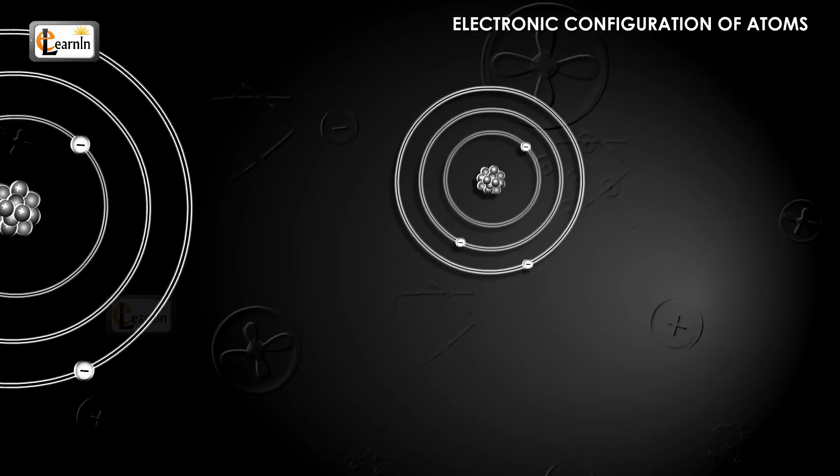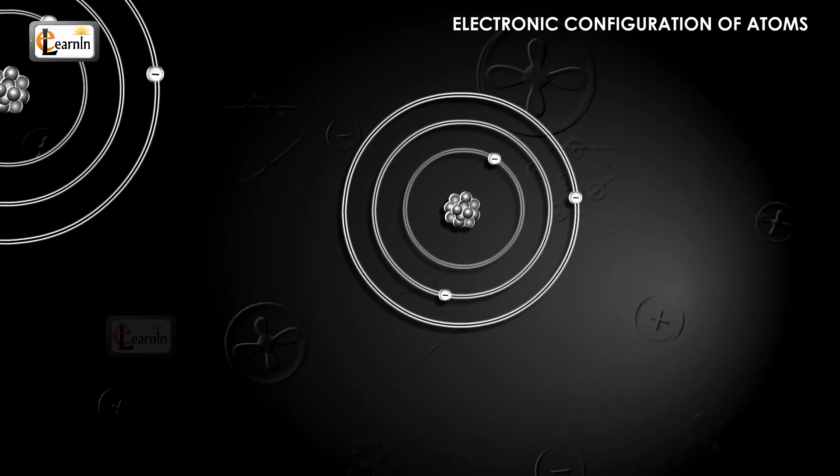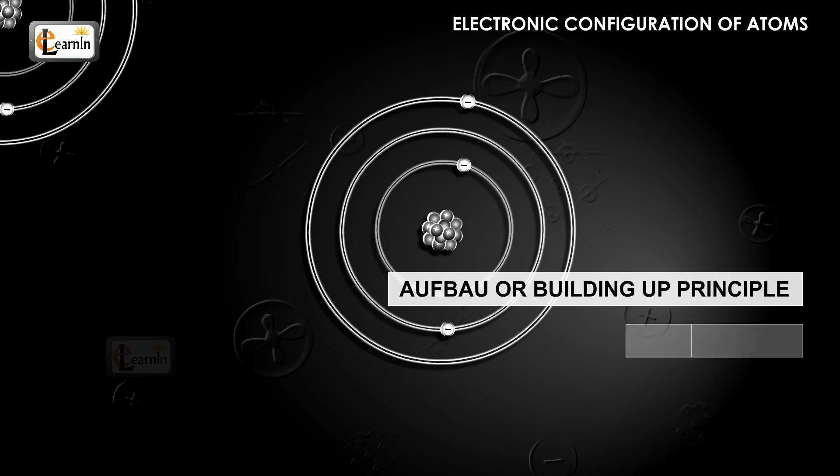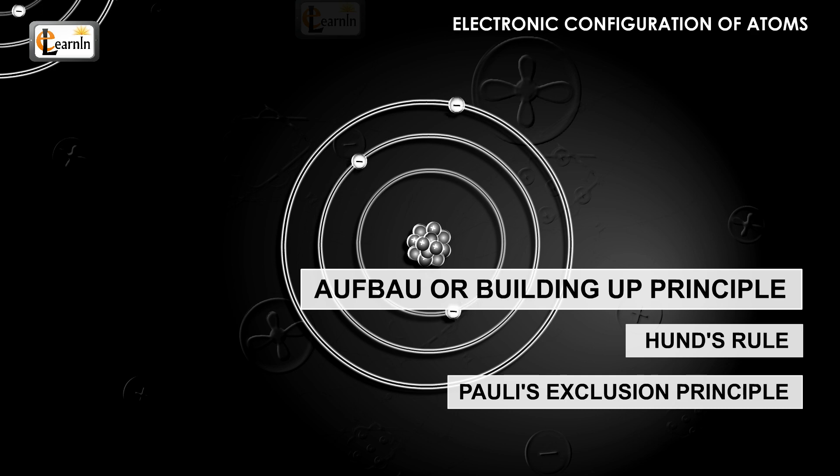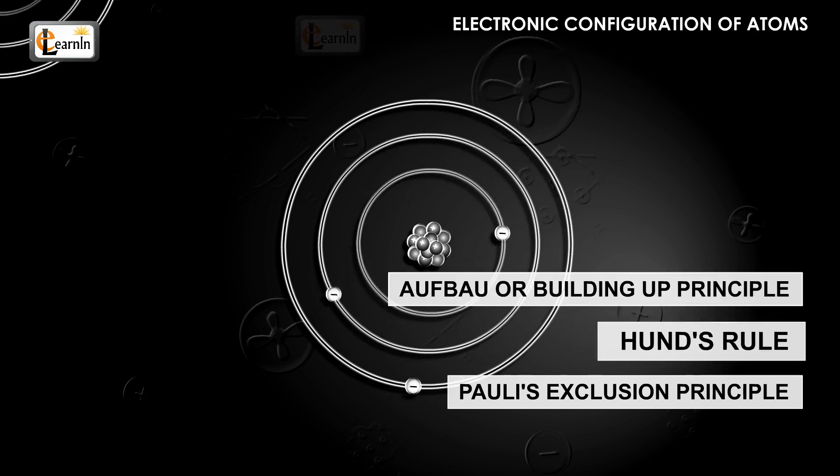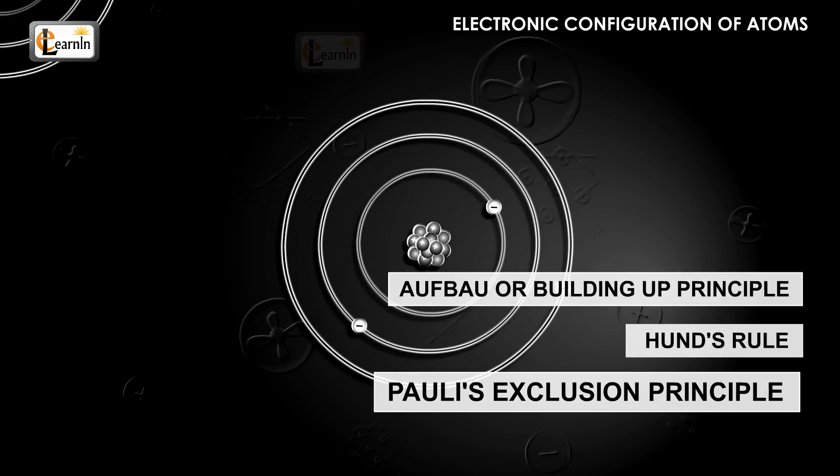The order in which these electrons are filled into the atomic orbitals are controlled by three crucial guidelines or principles, which include the Aufbau or Building Up Principle, Hund's Rule, and Pauli's Exclusion Principle.